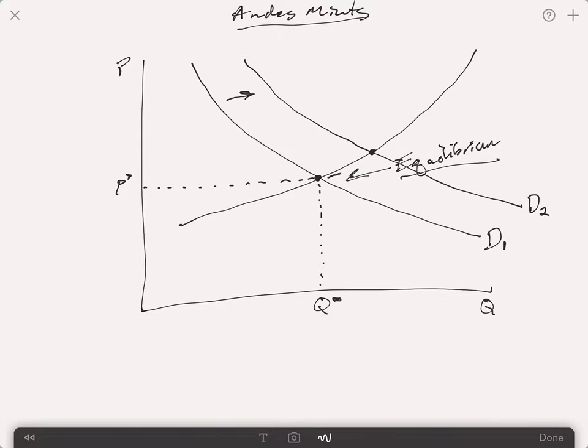You'll notice that the new equilibrium is up here. And we just follow the curve up to the new point. So, when we have, in this case, when we have an increase in income.